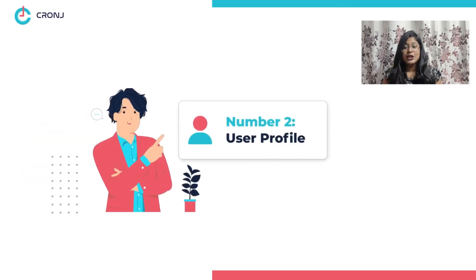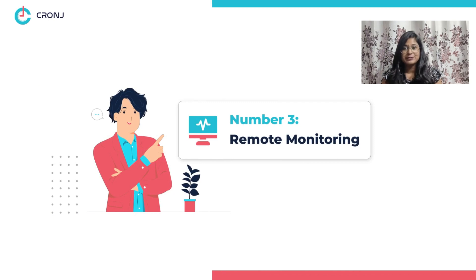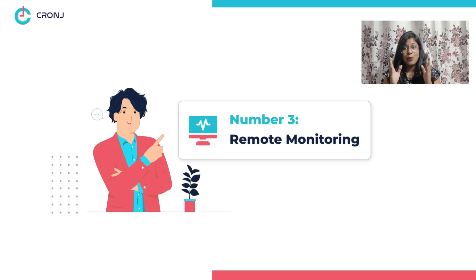Number two: user profile — a mental health app should allow users to create their profiles where they can store their general as well as health data for a personalized experience. Number three: remote monitoring — the app must have wearable integration features to sync and analyze mood patterns, symptoms, stress levels, as well as progress.